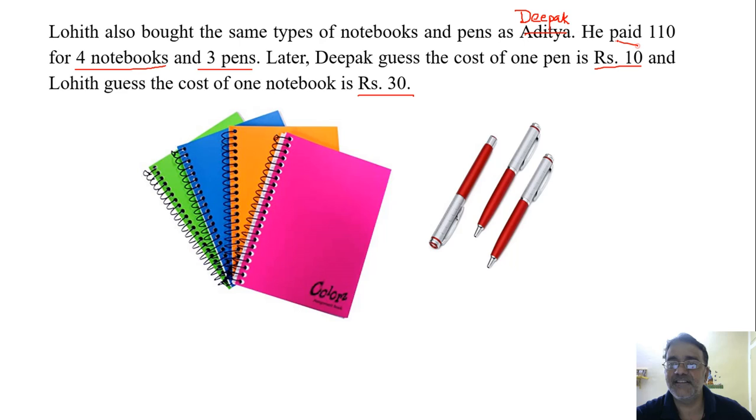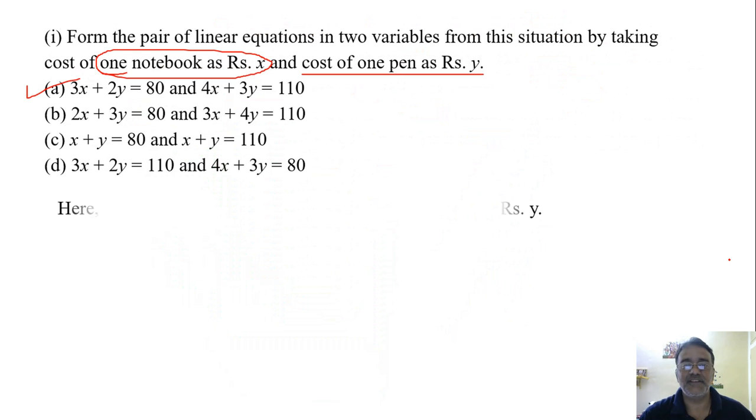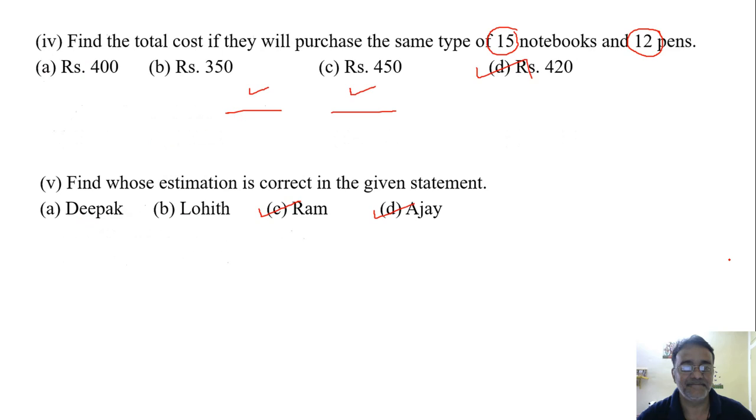See. Deepak ka guessing thar. 1 pen ka 10 hai. And notebook ka joh guess kiya tha. Logit na 30. And 16 rupees notebook ka Ajay na guess kiya tha. And 25 rupees Ram na guess kiya tha. Toh kis ka guessing correct hai. Deepak. Right.